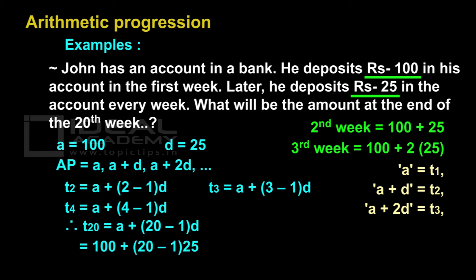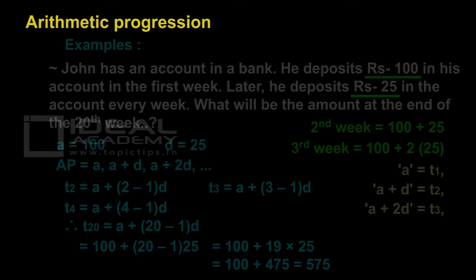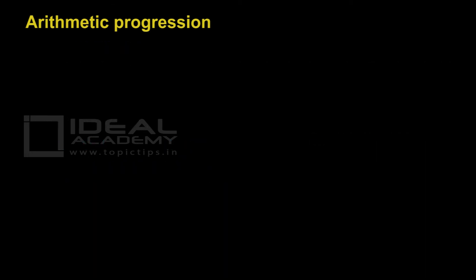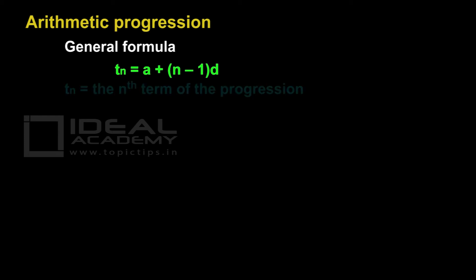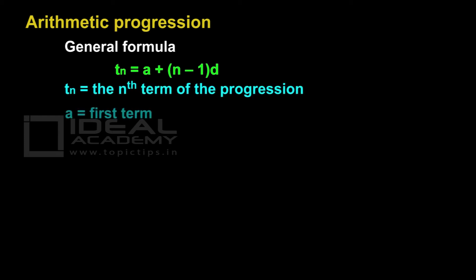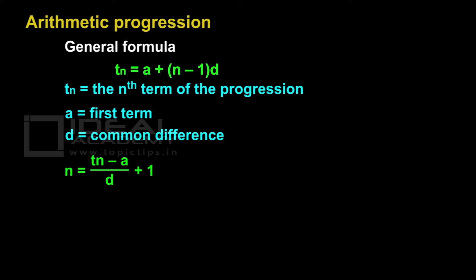100 plus (20 minus 1) into 25. This is equal to 100 plus 19 into 25. The answer is 575. John's savings after the 20th week is Rs. 575. Here, we can observe that if we substitute n instead of 20, we will get a general formula. The nth term tn is equal to a plus (n minus 1)d. Here, tn is the nth term of the progression, a is the first term, and d is the common difference. If tn, a, and d are known, n is equal to (tn minus a) divided by d, plus 1.